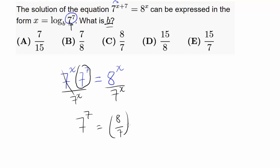We can simply factor out the exponent x. Because x is being applied to 8 and 7, you can just factor it out, and this equals 7 to the 7th power.